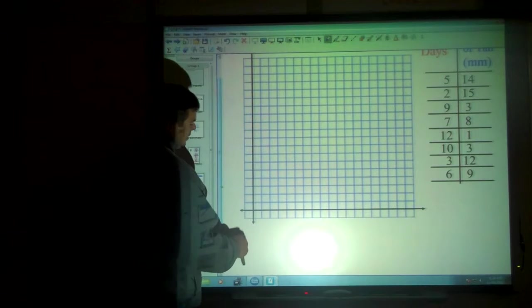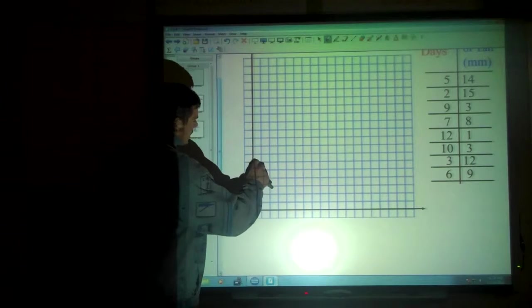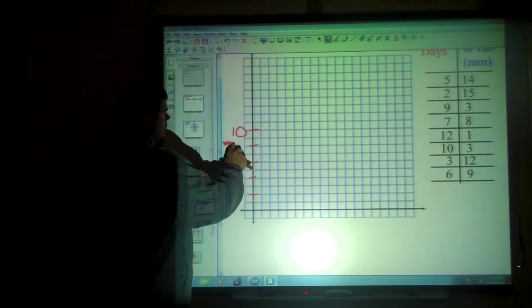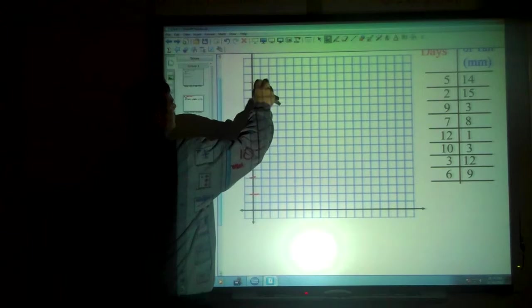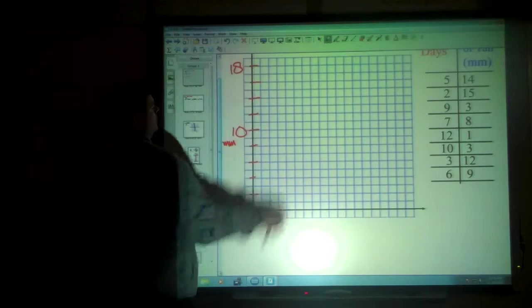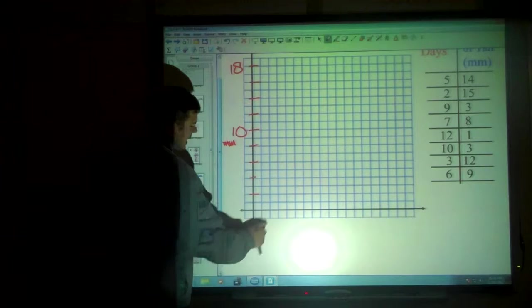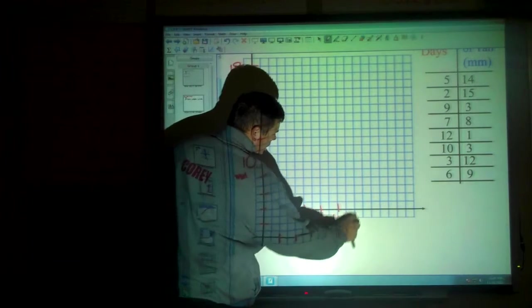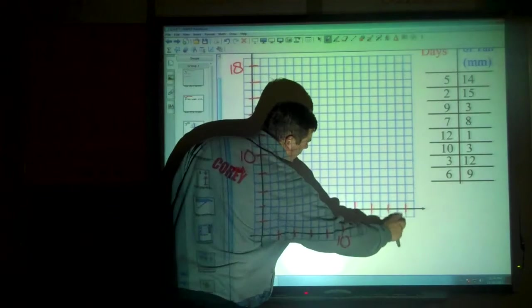So I have 5, 14. Here is 2, 4, 6, 8, 10 millimeters. 12, 14, 16, 18 millimeters. Across the bottom, I've got days. 2, 4, 6, 8, 10 days. 12, 14, 16, 18 days.